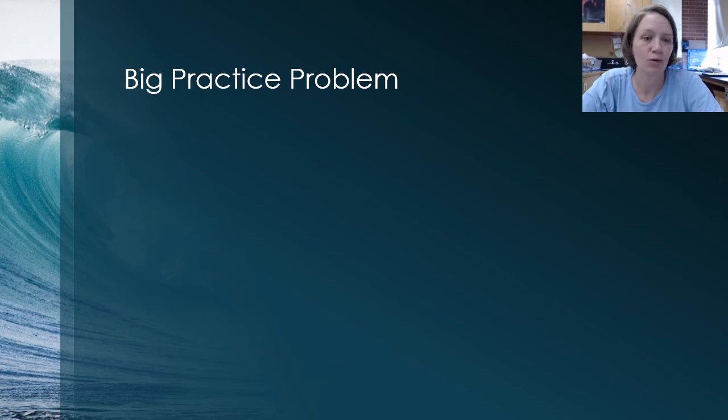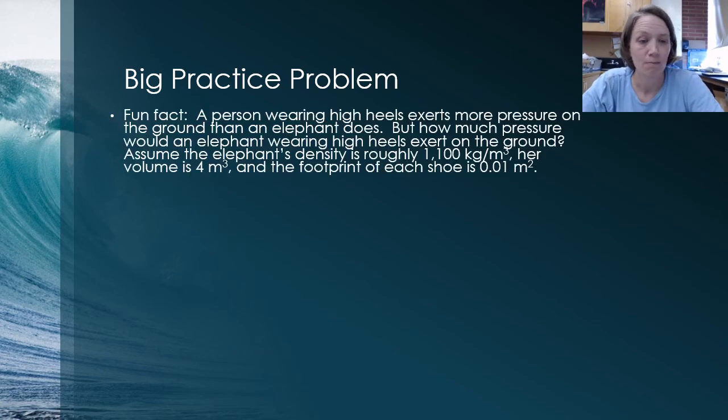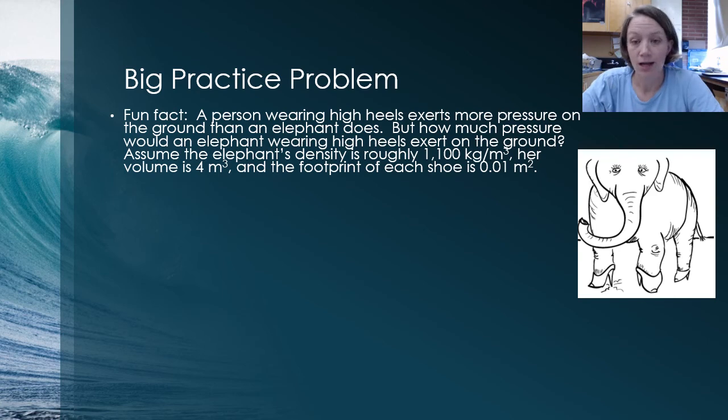So before we finish with this, I want to run you through one big practice problem based on a fun fact. Fun fact, person wearing high heels exerts more pressure on the ground than an elephant does. But the question is, how much pressure would an elephant wearing high heels exert on the ground? Let's assume the elephant's density is roughly 1100 kilograms per meters cubed, which is just more than water. Her volume is four cubic meters and the footprint of each shoe is 0.01 meters squared. So I would pause this video, try solving the problem, grab your calculator, and then if you get stuck, you can come back and listen through the steps as I give my solution.